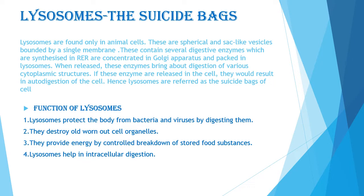When these enzymes get released in the cell, they bring about digestion of various cytoplasmic structures. If these enzymes are released in the cell, they would result in autodigestion of the cell. Hence, lysosomes are also referred to as the suicide bag of the cell. They contain several digestive enzymes which have the capacity to digest various cytoplasmic structures. During breakdown of cell structure, when the cell gets damaged, lysosomes disperse in the cell, may burst, and enzymes start eating up their own cell — they perform autodigestion of the cell.